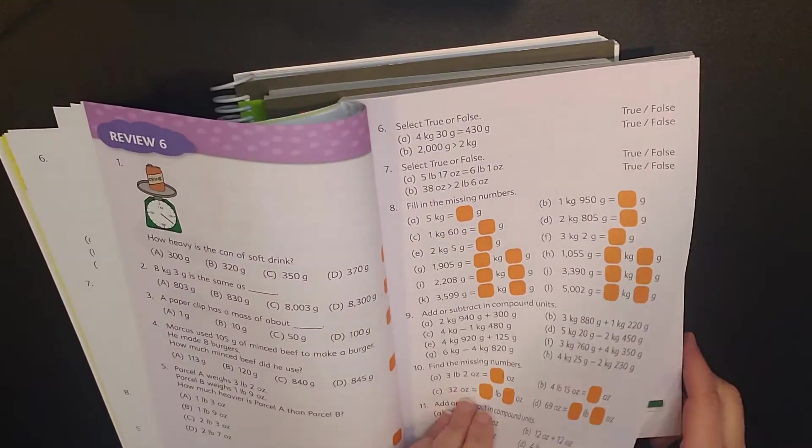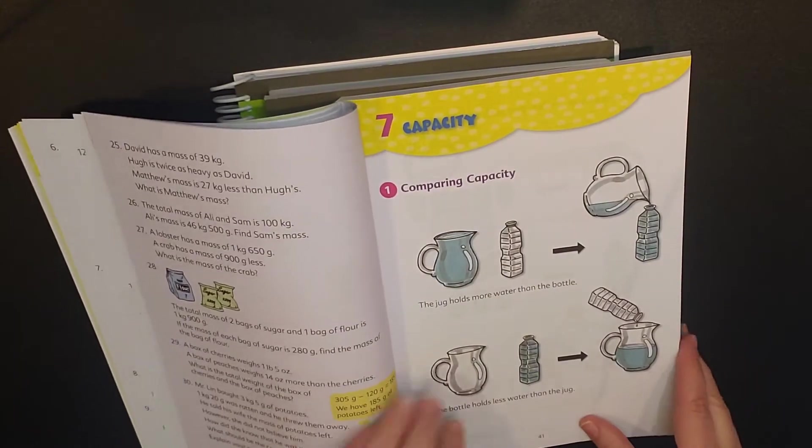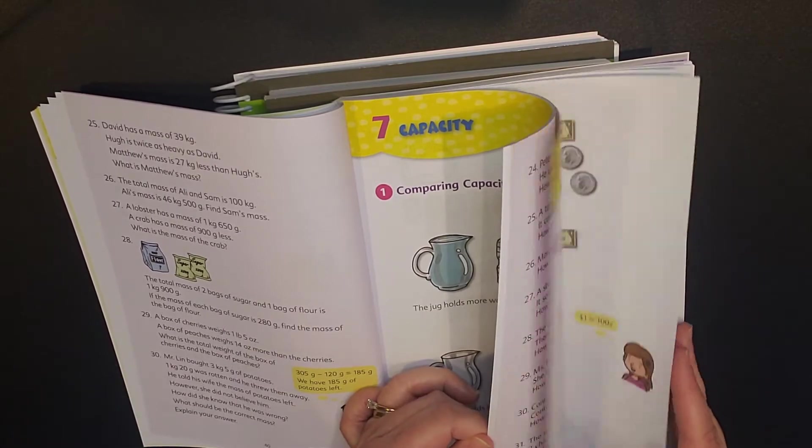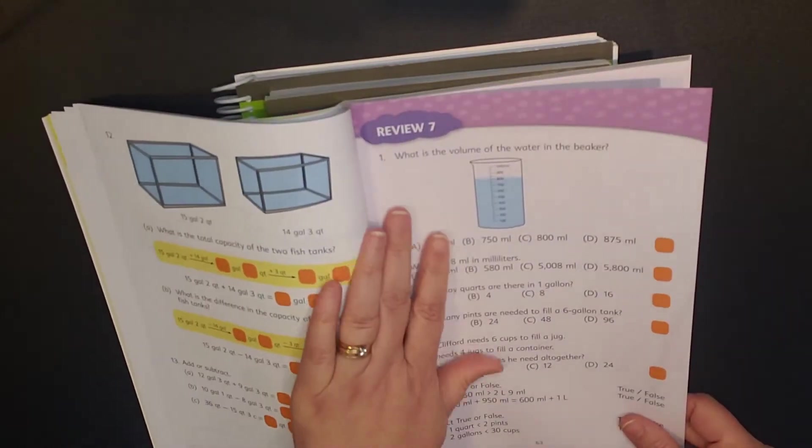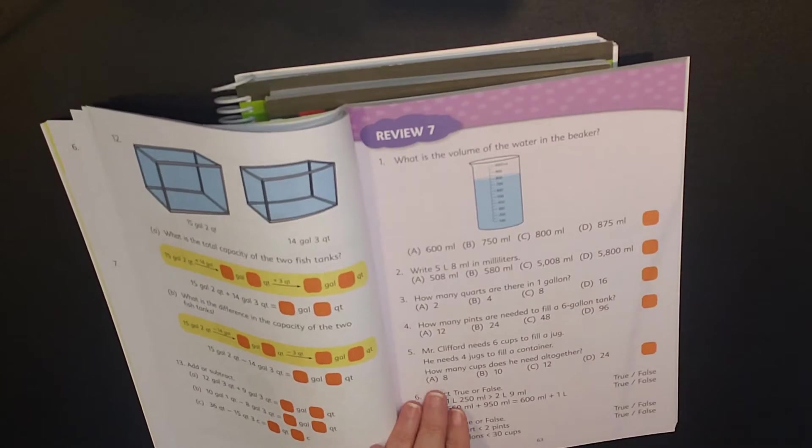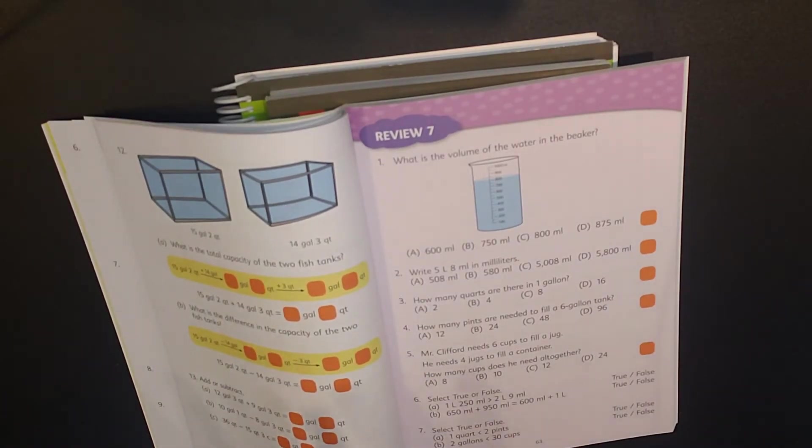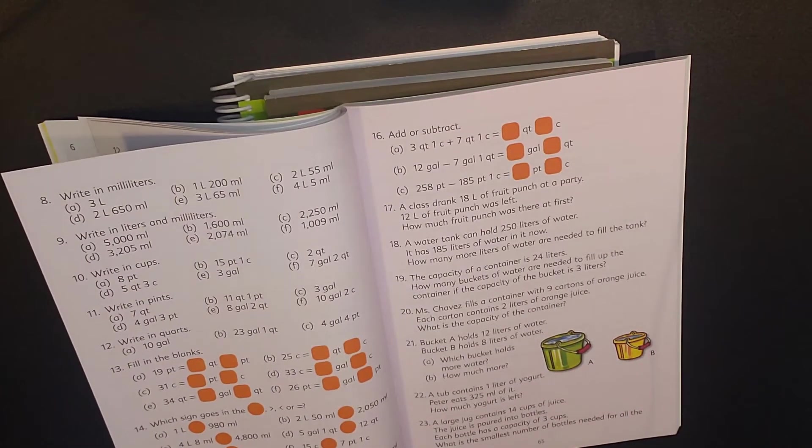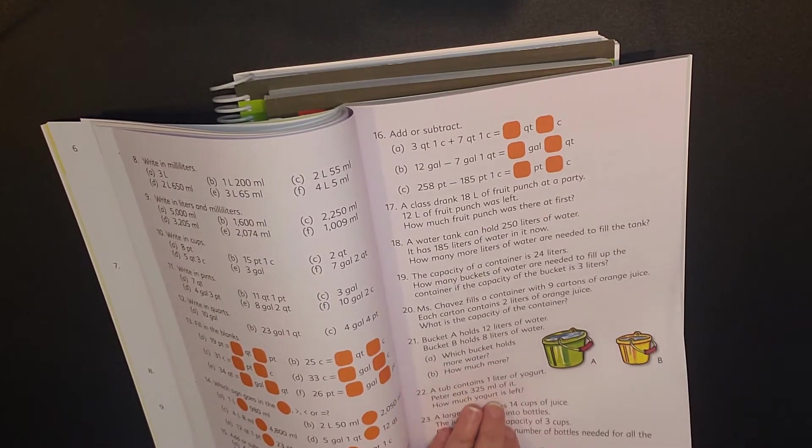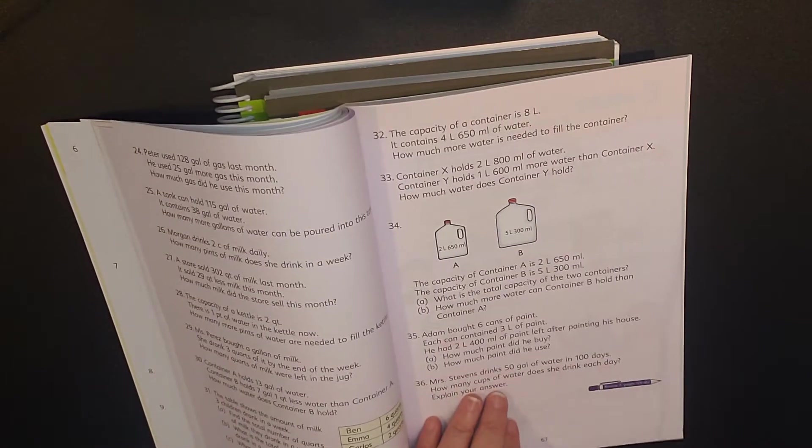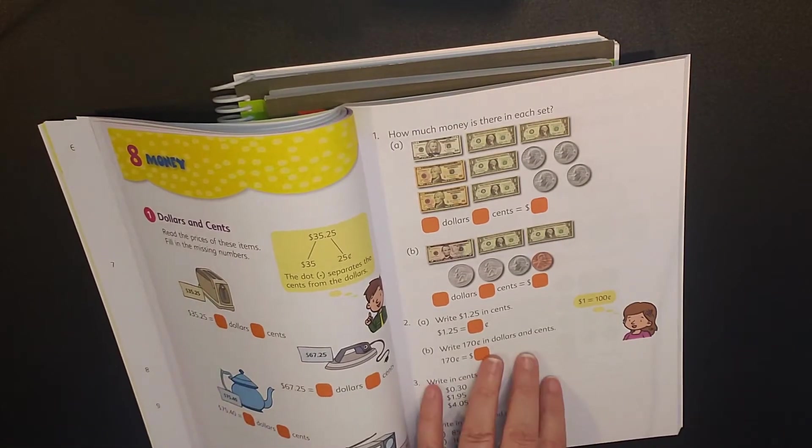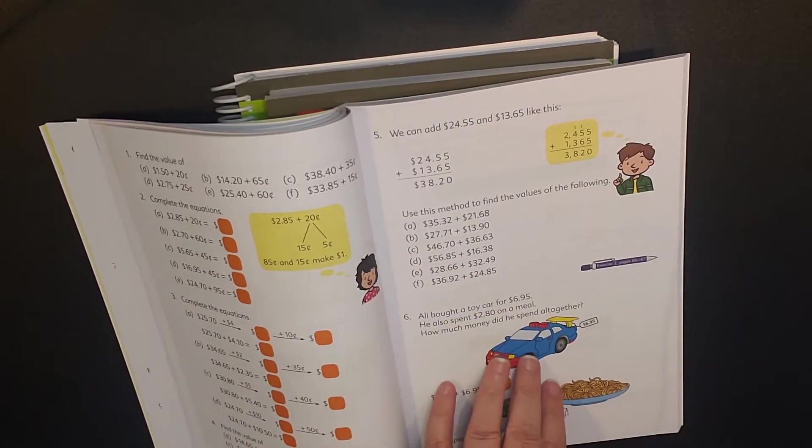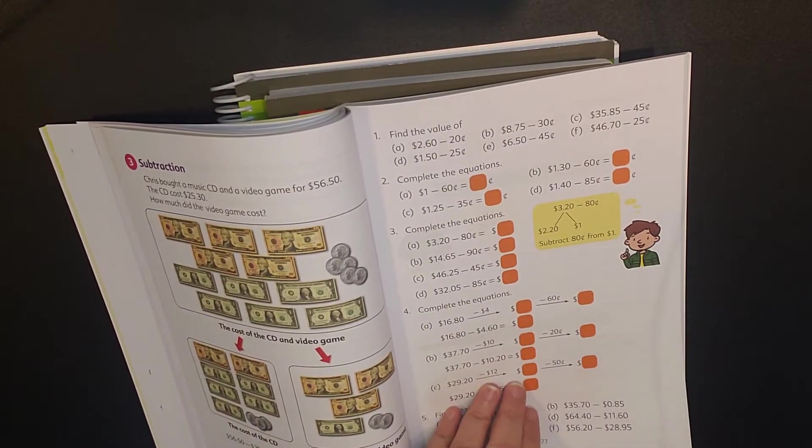You're going to have really nice color on this. You have some nice pictures. There are a number of different questions within each page. Now here is your review. So you're reviewing what you just learned, and then you go into the next chapter. Singapore math is a mastery program, which means they are expecting you to have mastered these concepts by the end of the section.